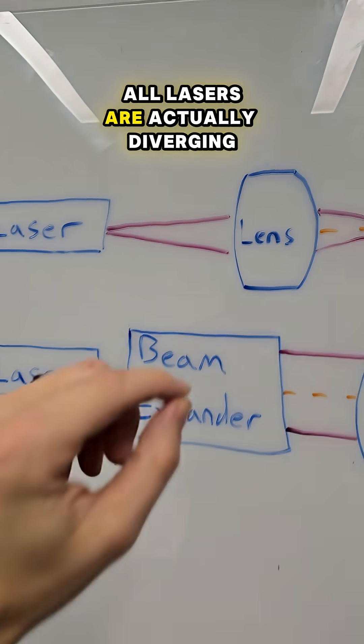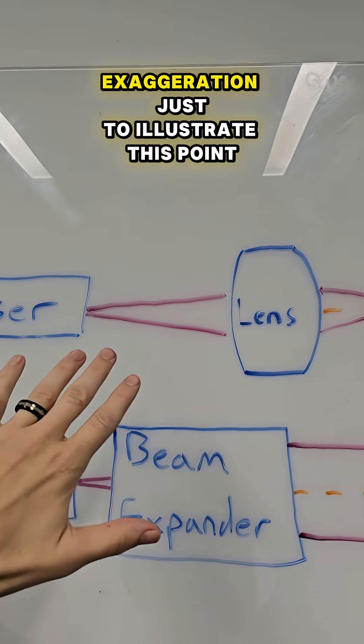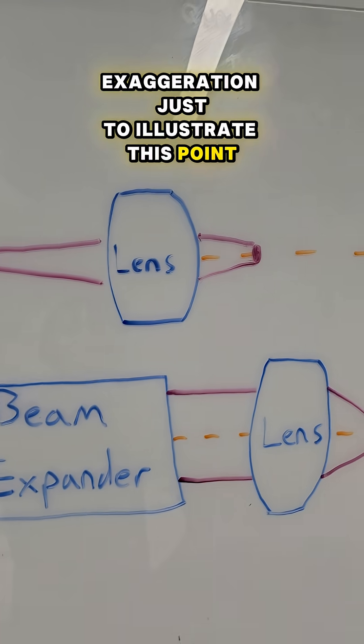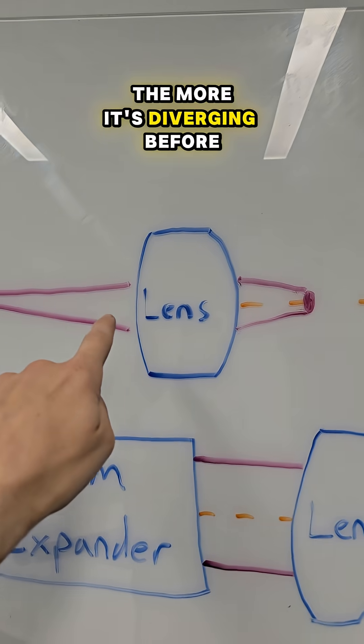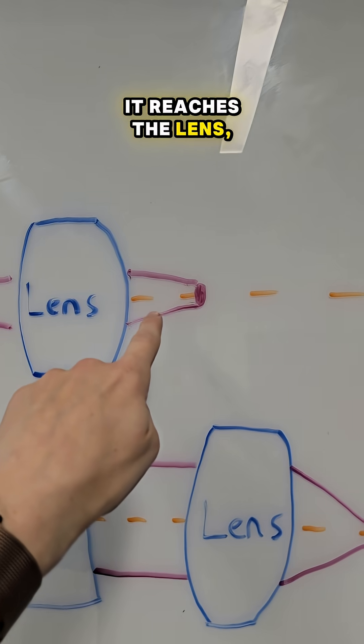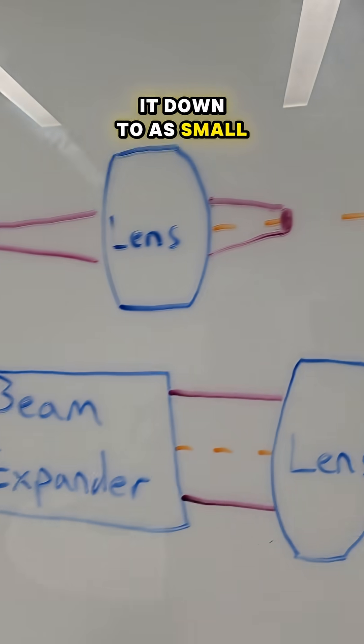All lasers are actually diverging or spreading out over time. This is by far an exaggeration just to illustrate this point. And if you're trying to focus a laser down to a tiny point, the more it's diverging before it reaches the lens, the larger the focus spot is. You're not able to get it down to as small of a final point.